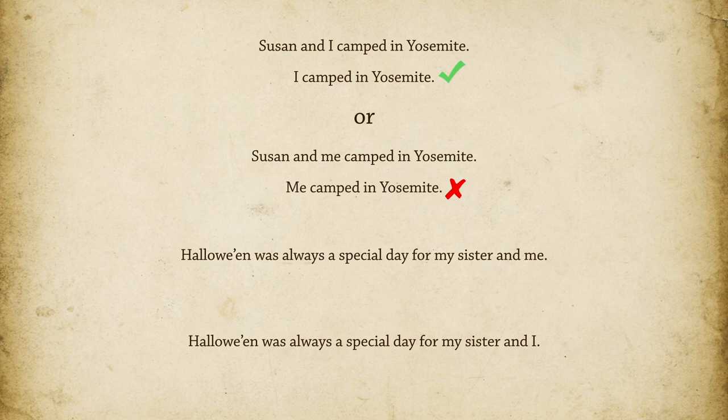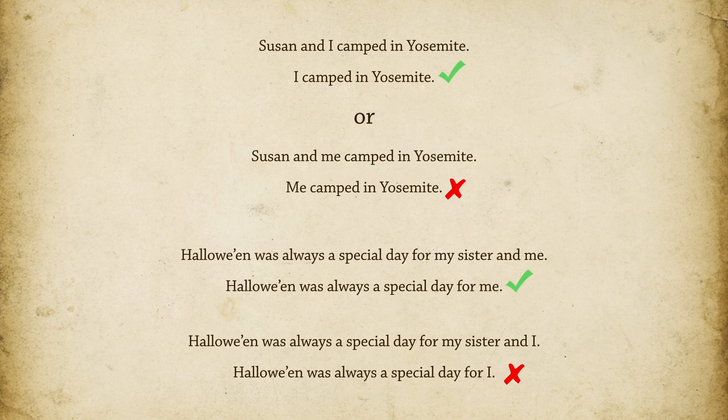'Halloween was always a special day for me.' Yes, that sounds good. 'Halloween was always a special day for I.' No. Do you see why that's the wrong choice? 'I' is a subject pronoun. We're looking for an object pronoun, so we should use 'me.'